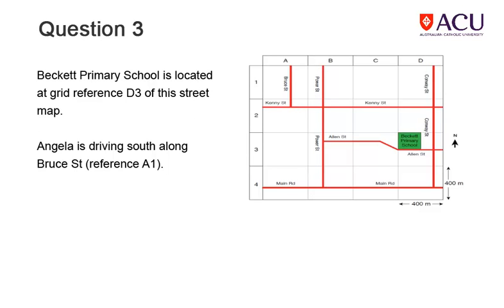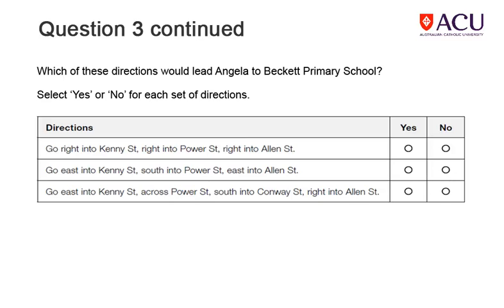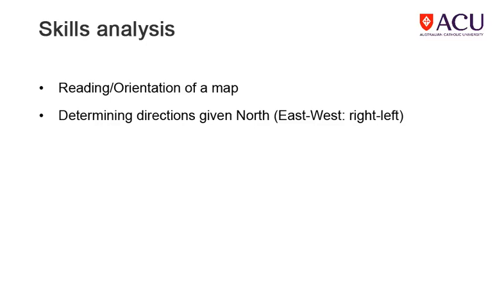Study carefully this street map showing the location of Beckett Primary School and the information. The question is on the next slide. The table contains three statements and you have to answer yes or no for each statement. You can use the Back button to go back and have another look at the map. Map reading skills are critical in answering this type of question, but also your ability to determine your new direction if you turn left or right from where you're going at present.